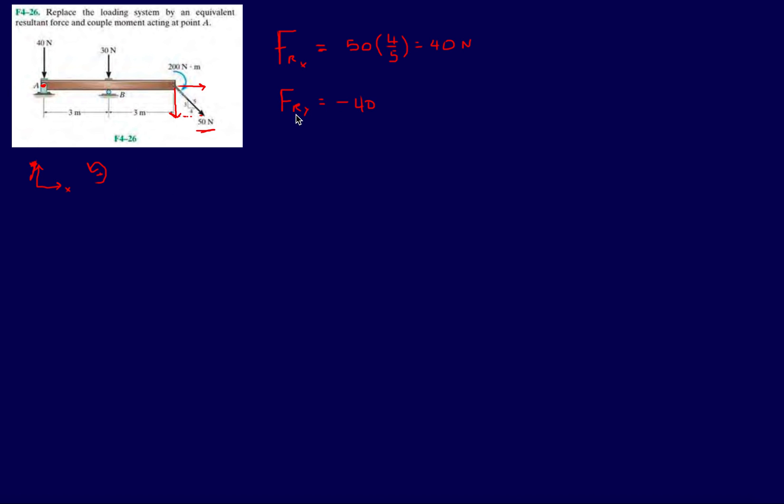Going back here, FRy, so minus 40 minus 30 and then minus this component of the force FY over here, which is going to be minus 50, and then which side is parallel to the Y axis, it's going to be that 3, so it's 3/5. This is minus 40 minus 30 minus 30, that's minus 100.